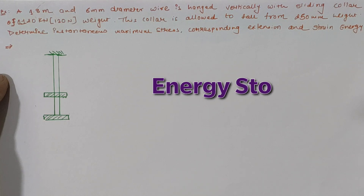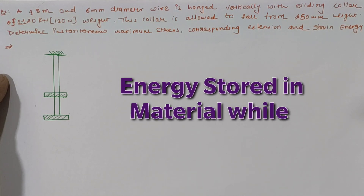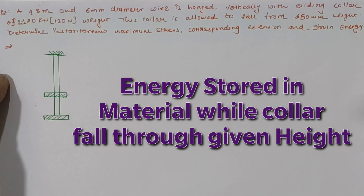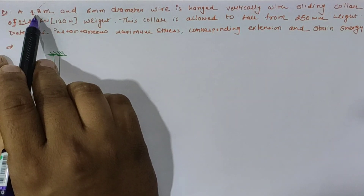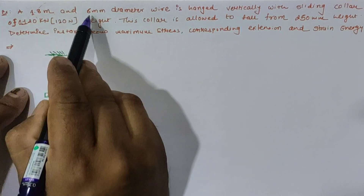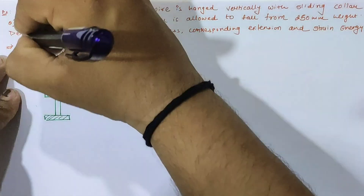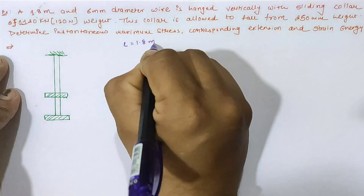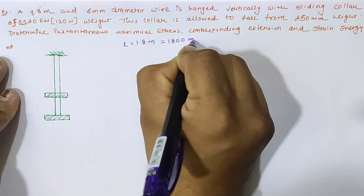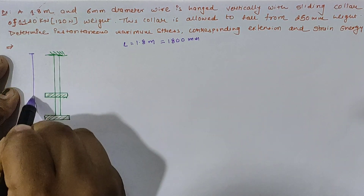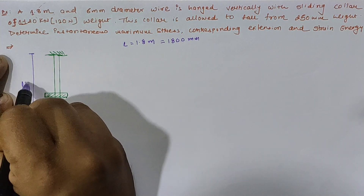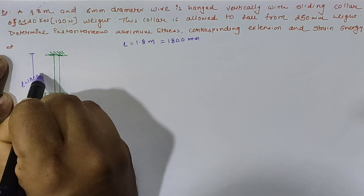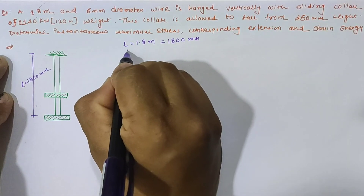Hello friends, today we are going to calculate the maximum instantaneous stress, extension, and energy stored in a given bar. According to the given data, we have a 1.8 meter length and 6 mm diameter wire, meaning the total length is 1.8 m, or 1800 mm.